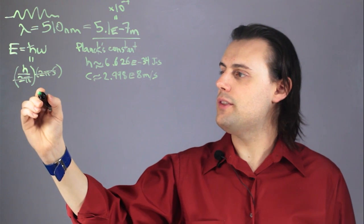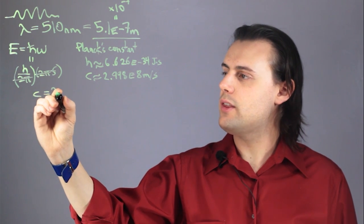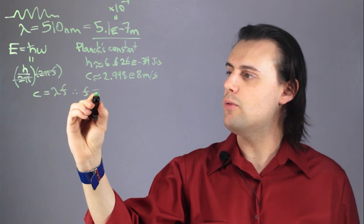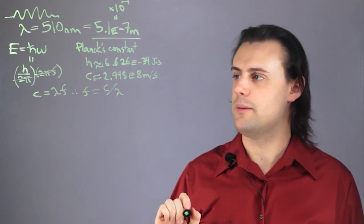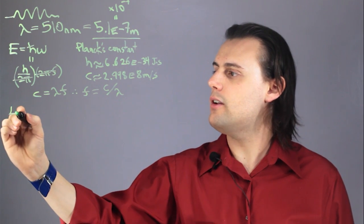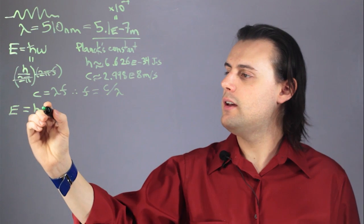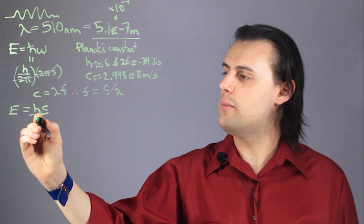And I know that the speed of light is equal to the wavelength times the frequency. Therefore, the frequency is equal to the speed of light divided by the wavelength lambda. So I have the energy is equal to Planck's constant times the speed of light divided by the wavelength lambda.